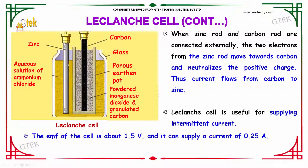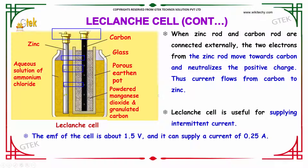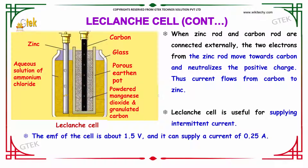When the zinc rod and carbon rod are connected externally, the two electrons from the zinc rod move towards the carbon and neutralize the positive charge, as electron flow goes from carbon to zinc. A Leclanche cell is used for supplying intermittent current. The EMF of the cell is about 1.5V and it can supply a current of 0.25A.